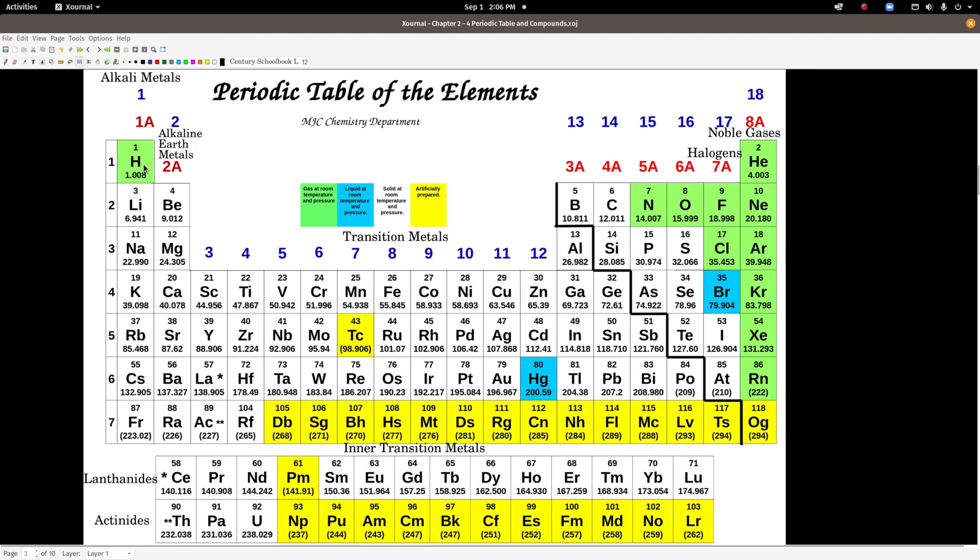This first column, lithium, sodium, potassium and so on, these elements are called alkaline metals. This column they're called alkaline earth metals. This column, fluorine, chlorine, bromine, iodide, astatine, these are called halogens. This column, helium, neon, argon, krypton, xenon, and radon, these are called noble gases.